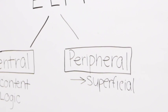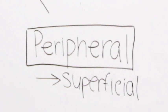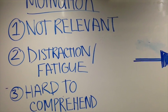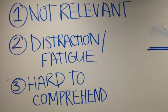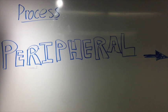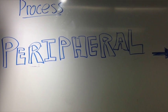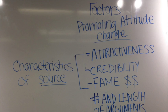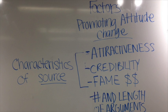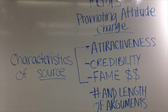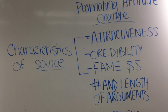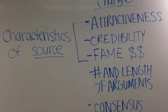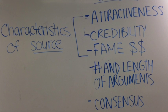The second route is the peripheral route. That is activated when the issue is not personally relevant, the person may be distracted or fatigued, or if the message is incomplete or hard to understand. The person will then use the peripheral route to comprehend the message and will be more likely to fall victim to this type of persuasion. This type of persuasion depends on attractiveness, credibility, and fame of the person giving the message, and the number and length of arguments. It is also influenced by consensus — if everyone is doing it, you will also be convinced of it.